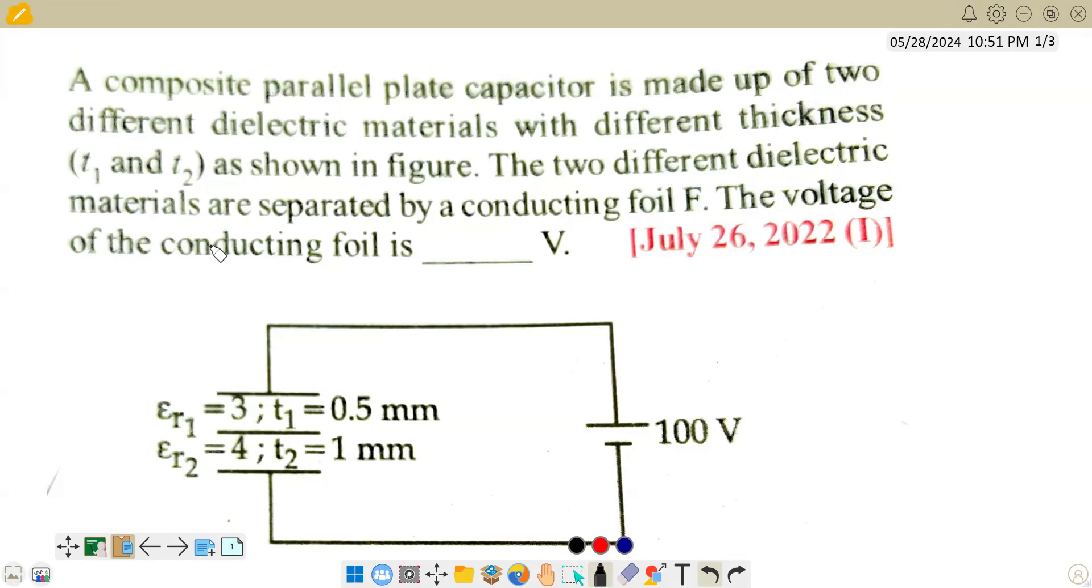The two different dielectric materials are separated by a conducting foil F. Maybe this is one dielectric material, this is another dielectric material. We have a conducting foil. So it is separated by conducting foil F.